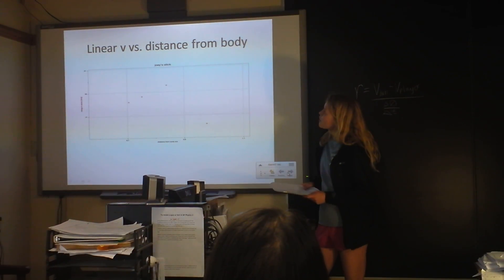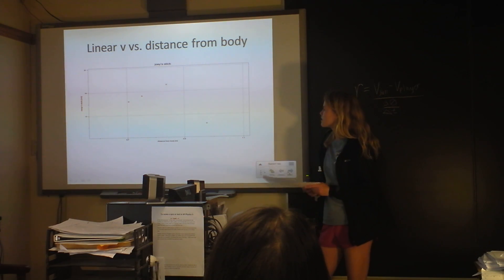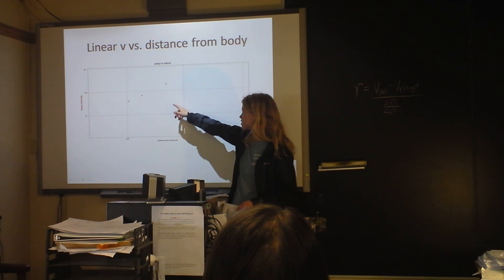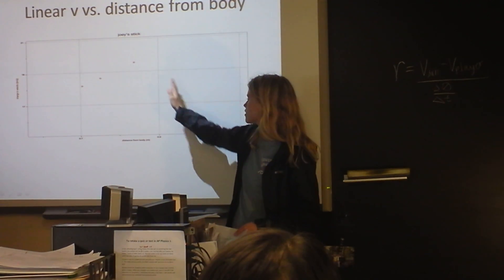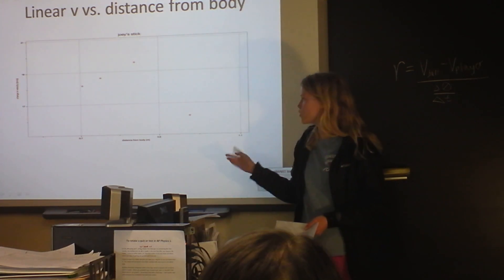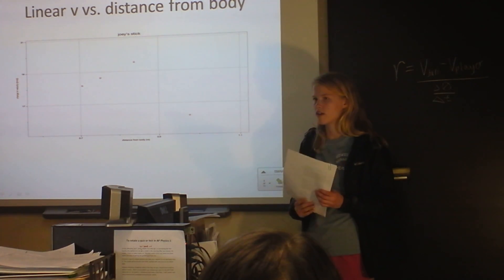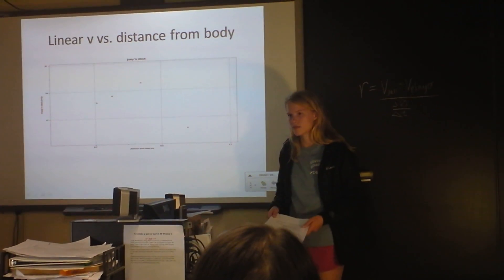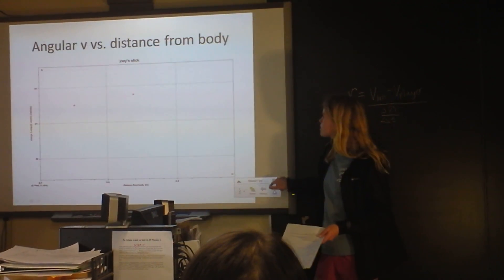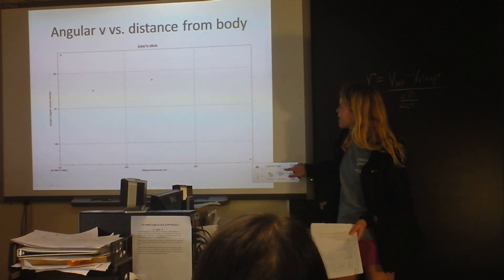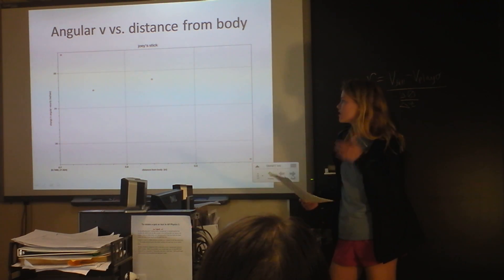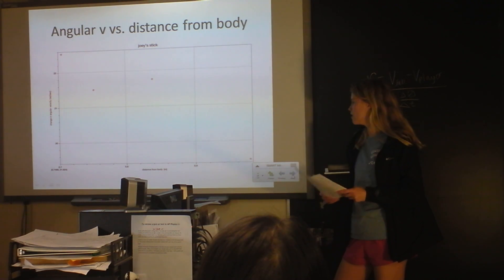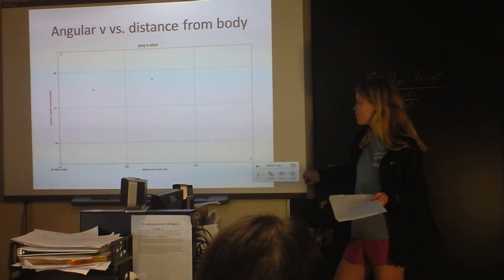Some graphs that I made were linear velocity versus distance from the body. And you can see that the further away it is from the body, it increases in speed until a certain point, which I found for a lot of different graphs, that if you increase one thing too much, then you sacrifice other things. This is angular velocity with distance from the body. And the angular velocity decreases with the increase of the distance from the body.